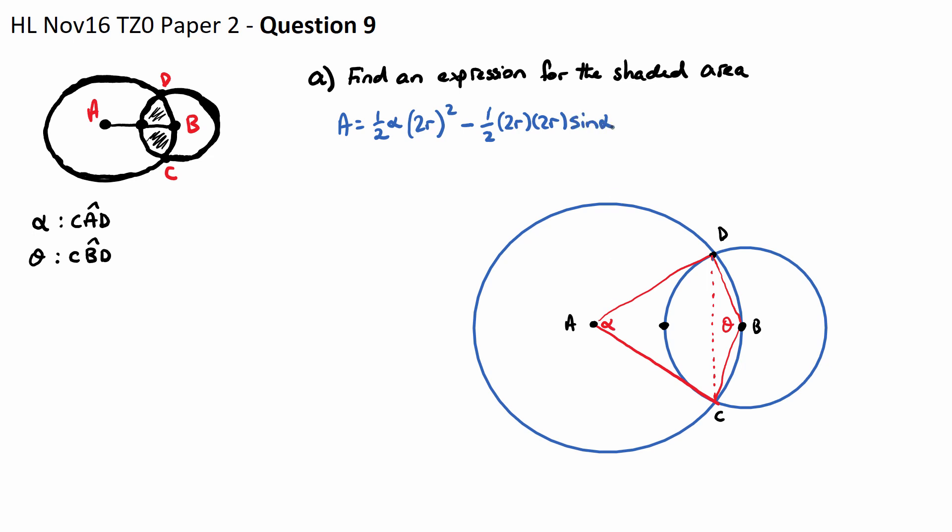So if I did the area of the sector minus the area of the triangle, I'm just left with this red bit here. Now this can be simplified, which I will at the end.